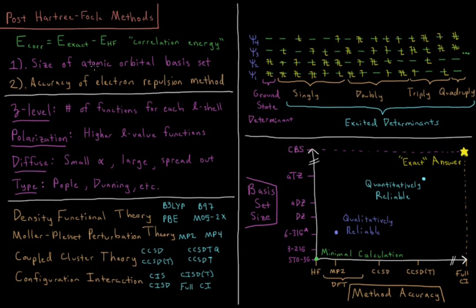So two factors affect the accuracy of any Hartree-Fock calculation. Number one is the size of the atomic orbital basis set that we use, so how many basis functions, what kind of basis functions, those types of things. The other thing that determines the accuracy of our electronic structure calculation is the accuracy of the electron repulsion method used.